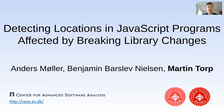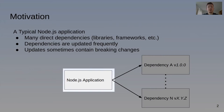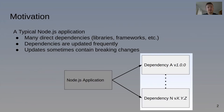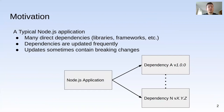Let's begin by considering the structure of a typical Node.js application. Such an application will have many direct dependencies — either libraries or frameworks — that provide much of the functionality required. Dependencies tend to be updated frequently. These updates fix bugs, improve performance, and sometimes even add new functionality.